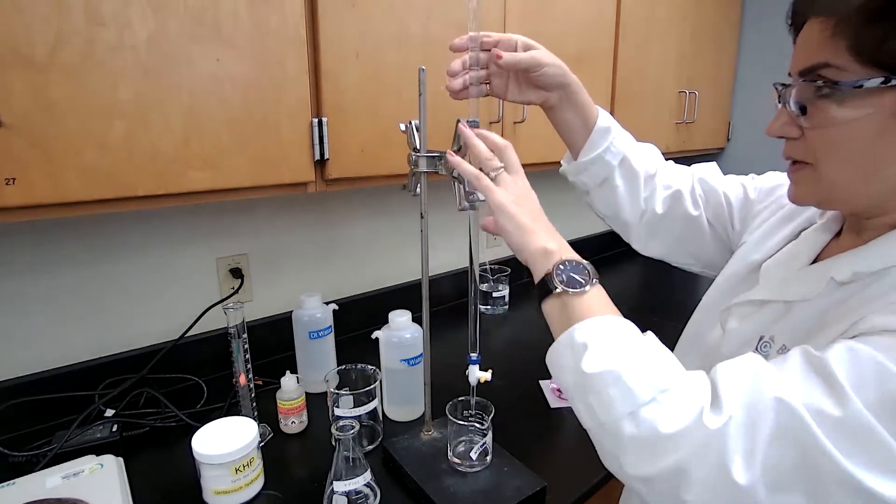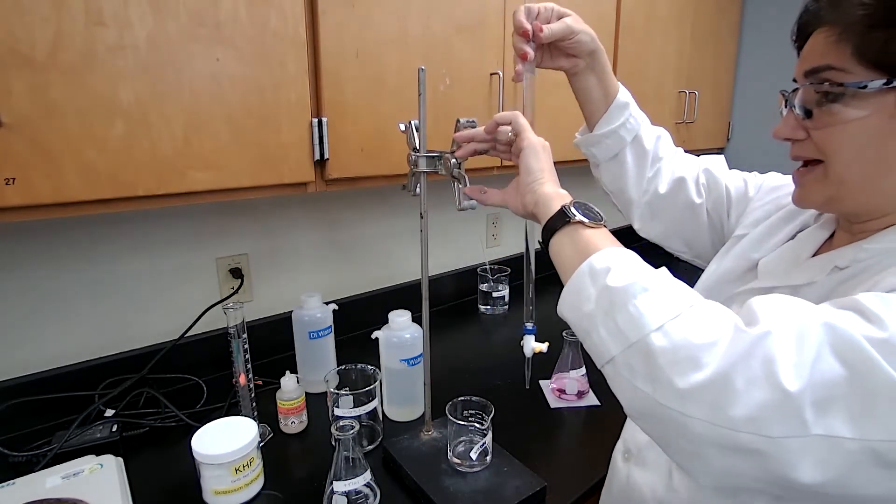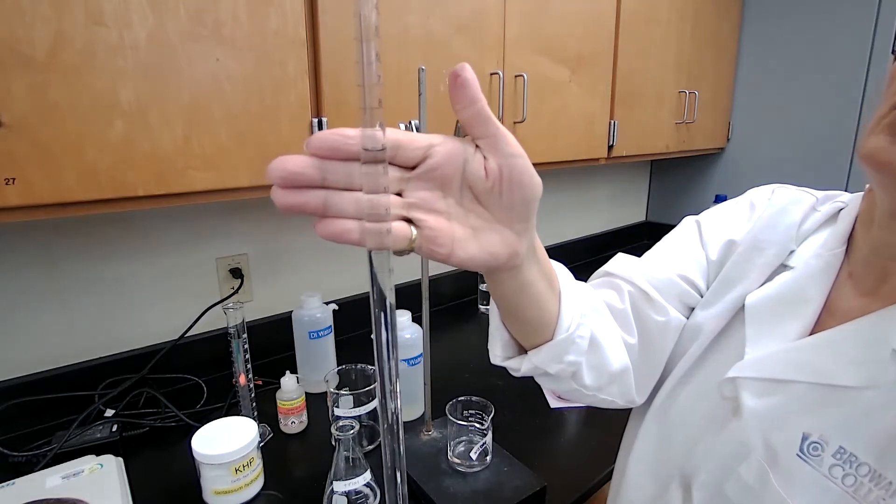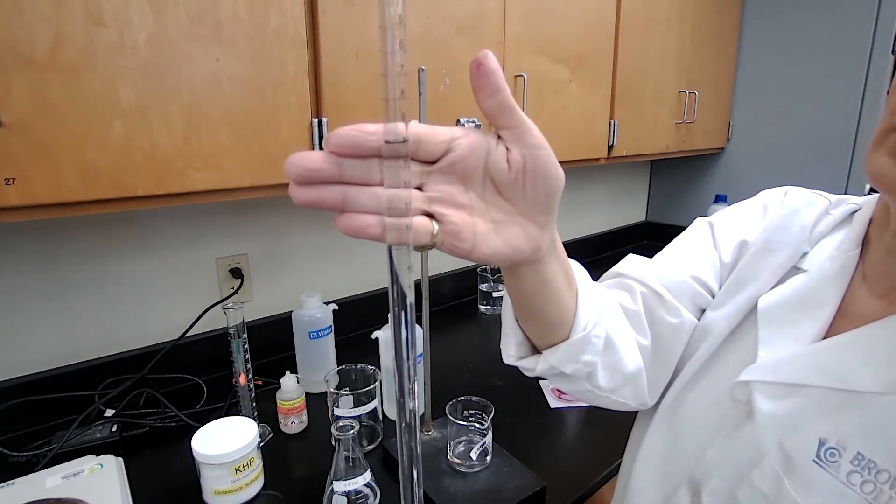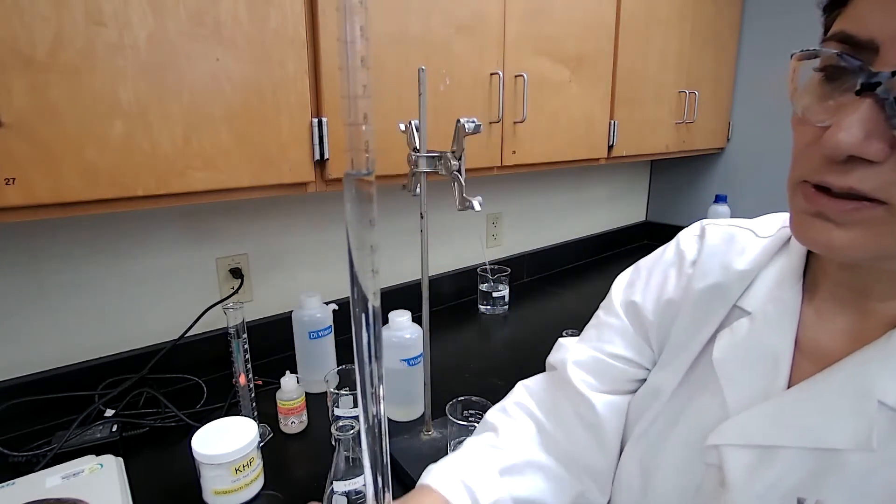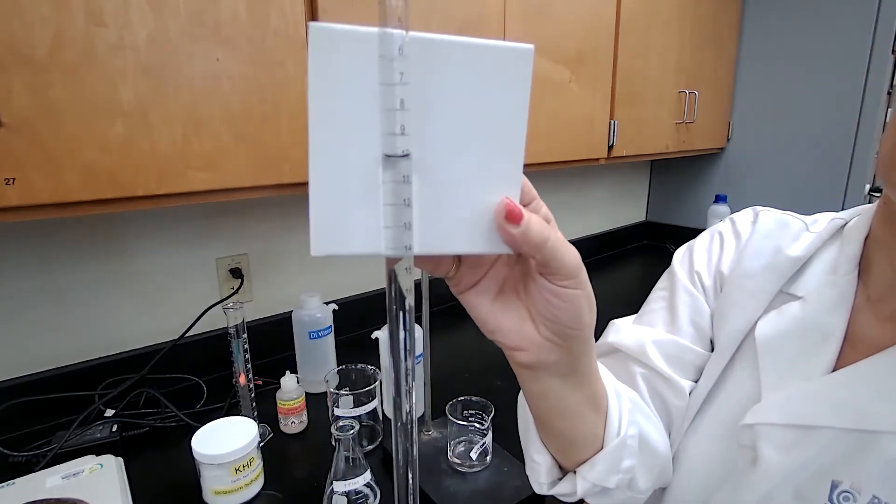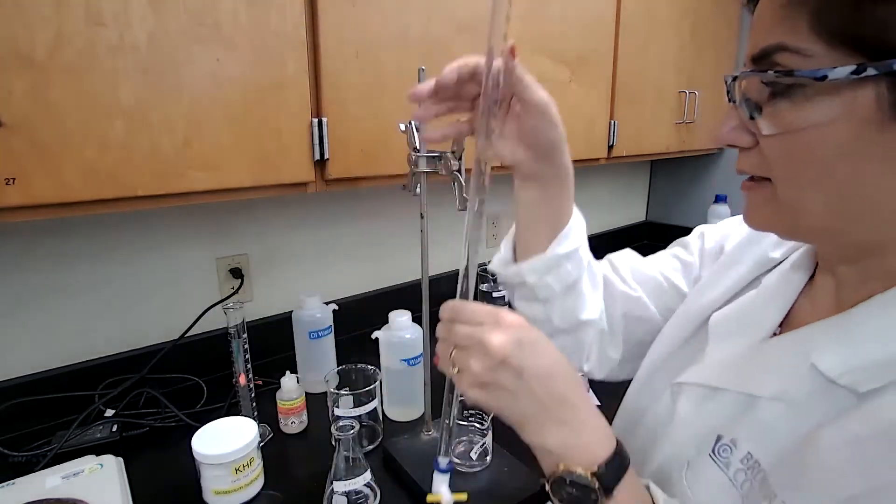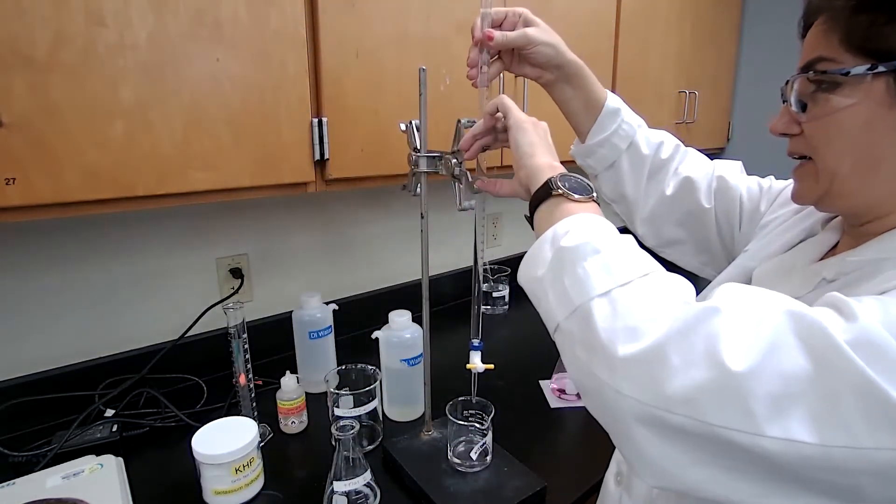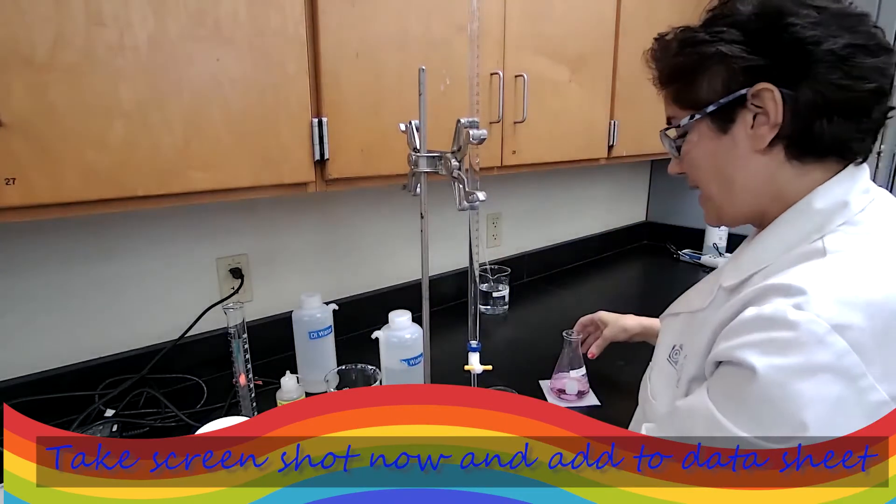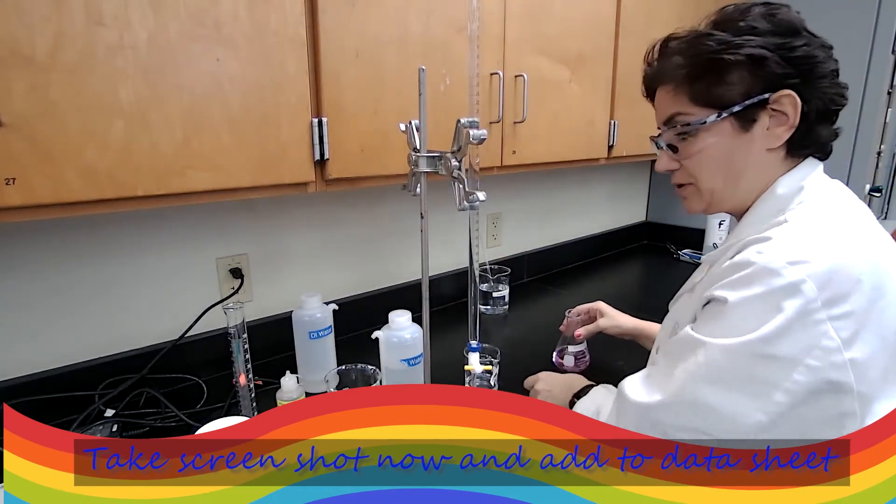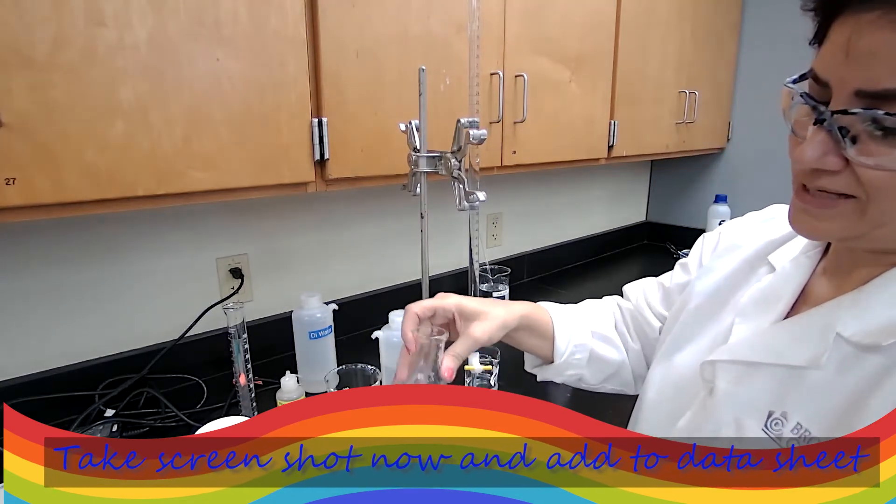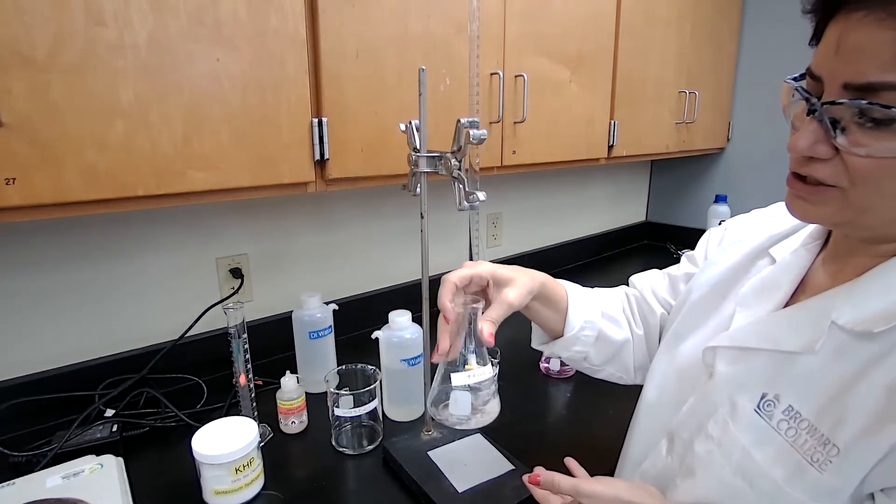Record this volume as initial. So that is the initial burette reading for trial two. That is your second trial. Initial burette reading 10.00 for trial two. And I'm going to start with the titration of the second sample of KHP.